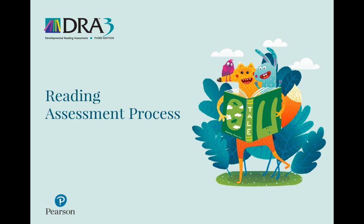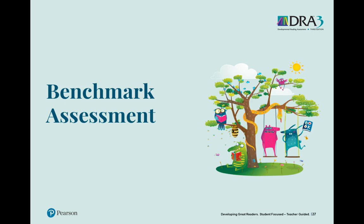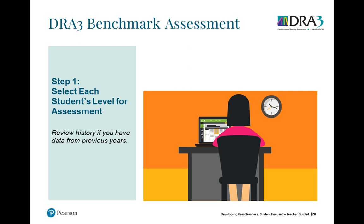Now, the reading assessment process. Starting with the benchmark assessment, step one is selecting each student's level. Previously, the first step was reading engagement, but that has been moved to the end as optional. Here you use the level estimator for brand new students, or review the student's history — looking at their DRA folder, seeing where the last instructional and independent levels were, and then starting assessment from that level.